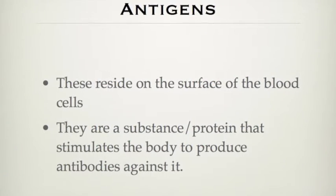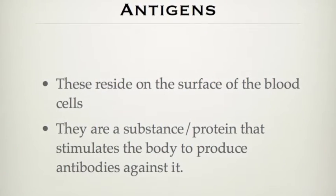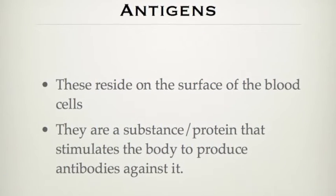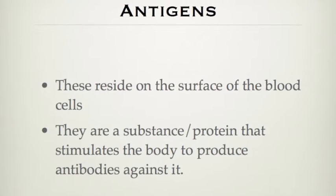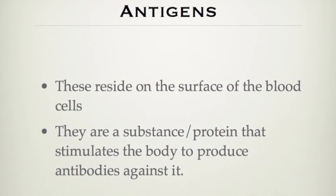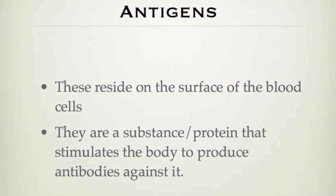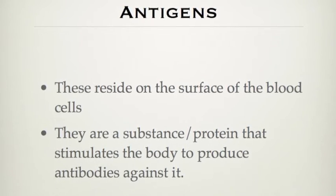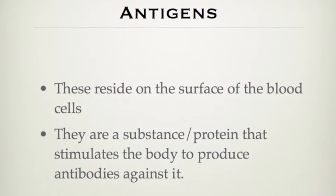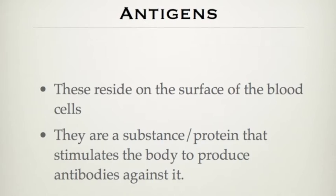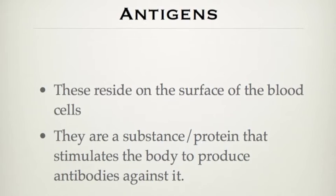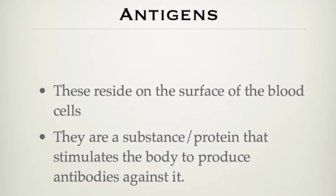Antigens are the proteins that exist on the surface of blood cells. These stimulate the body to produce antibodies against them. You'll see that in a moment when we talk about each blood type.